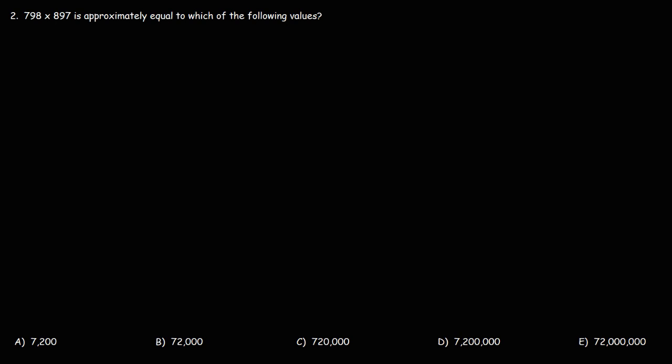So, what can we round 798 to? 798 can be rounded to the nearest hundred. So, we could say it's approximately 800. And, 897, we could round that up to 900. So, now, let's multiply.